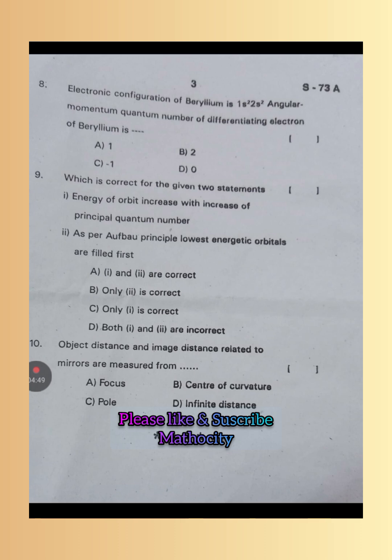Tenth one: Object distance and image distance related to mirrors are measured from - so C is the right answer. All the distances are measured from the optic center in the case of lenses. In the case of mirrors, all the distances are measured from the pole.